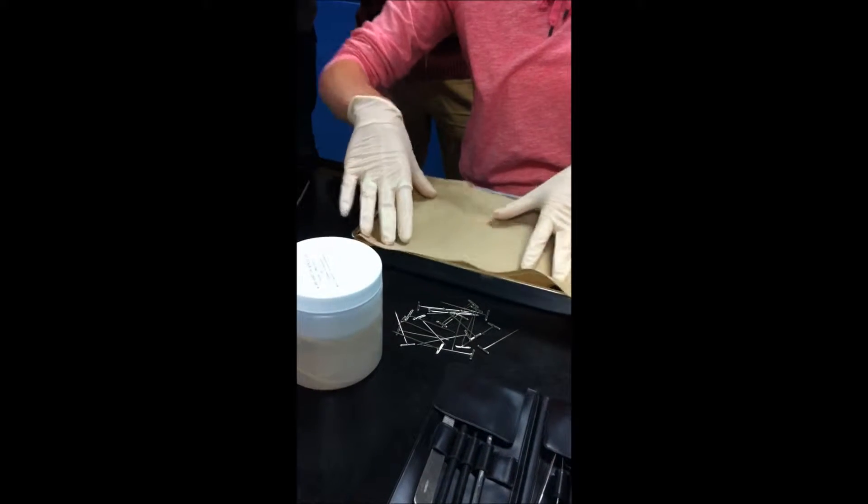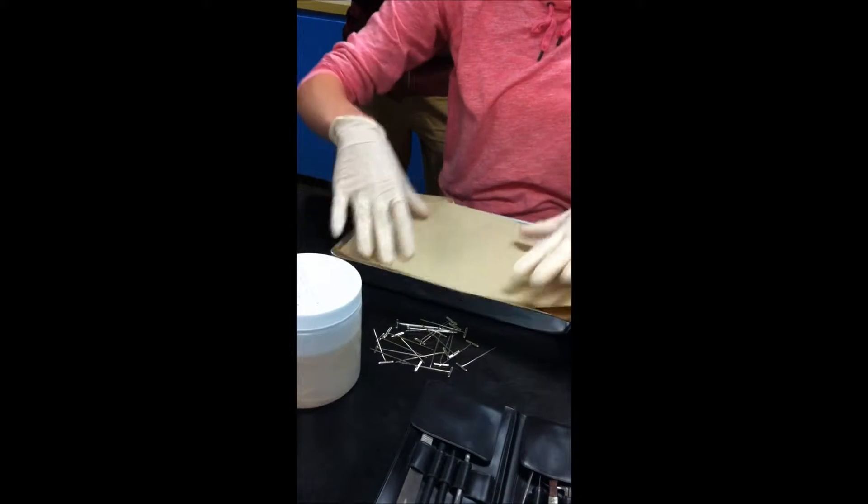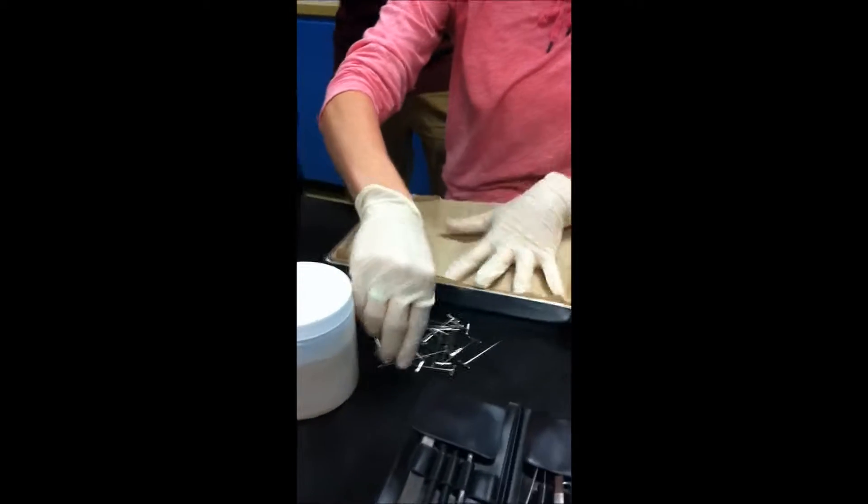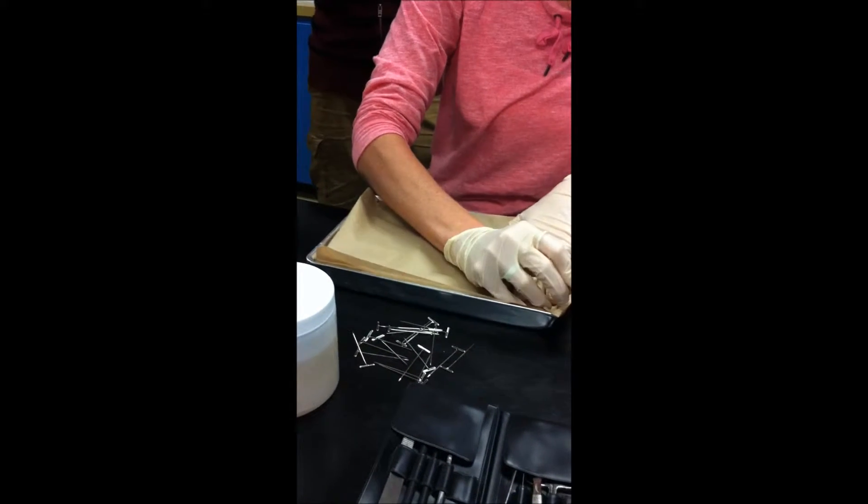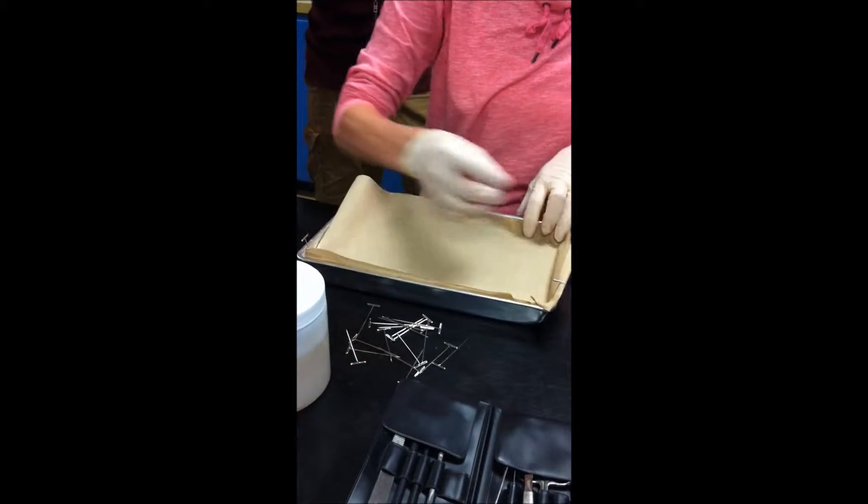Because some of our organisms that we're going to be dissecting are quite gungy. In other words, there's lots of liquidy grossness in there. So, having a piece of paper towel down helps with absorption of that, and it keeps the liquid at bay.